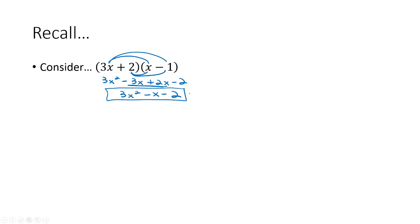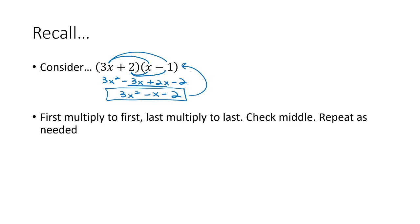And then we combine terms in the middle to get 3x² - x - 2. Now I want to notice as we compare the answer to the problem, the first terms of 3x times x would always multiply to the first term of 3x². Similarly, the last terms of 2 and -1 would always multiply to the last term of -2.